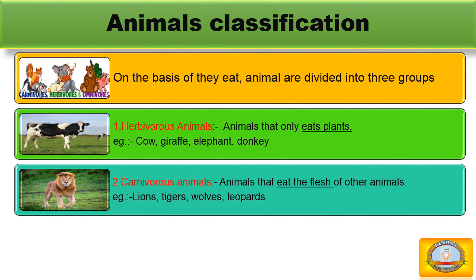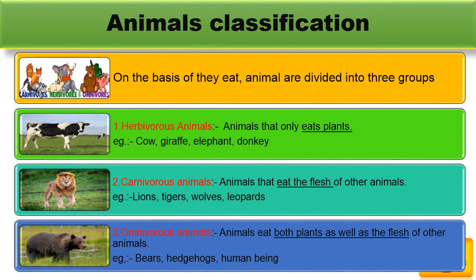And the third one: Omnivorous animals. Some animals eat both plants as well as the flesh of other animals. They are called omnivorous animals. Deer and hedgehogs are omnivorous animals. Human beings are also omnivorous.